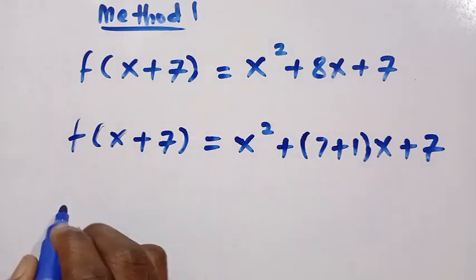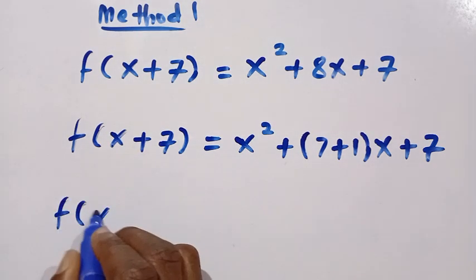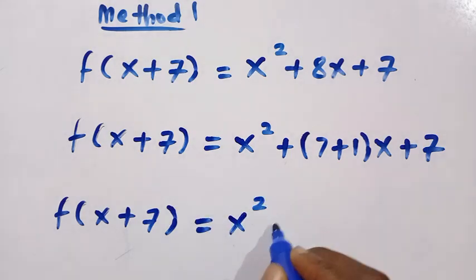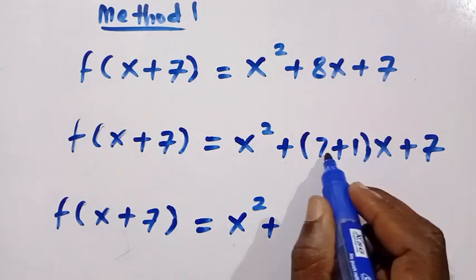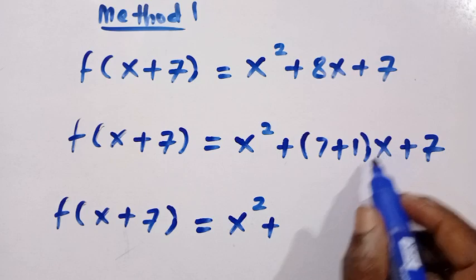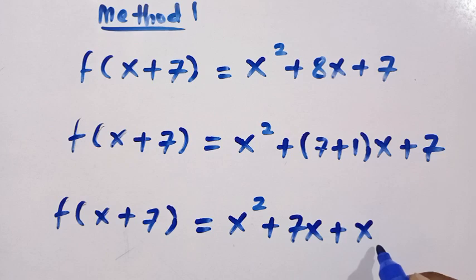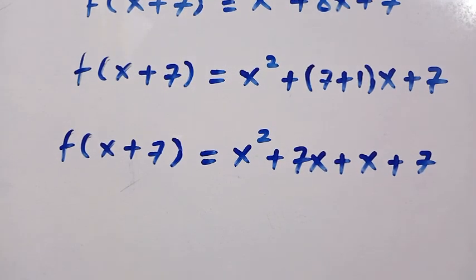So therefore, the middle term here becomes 7 plus 1, then x + 7. So the next step we have f(x+7) = x² + 7x + 1x + 7. By opening this parenthesis with x, we have 7 times x, so this gives us 7x plus 1 times x, that is x. Then here is plus 7.